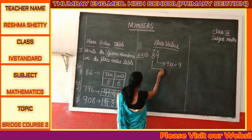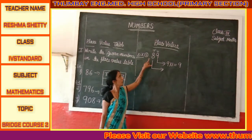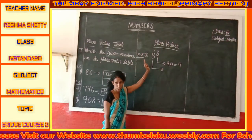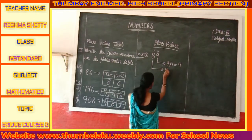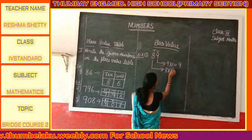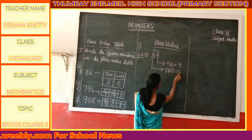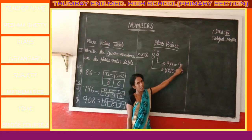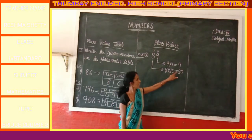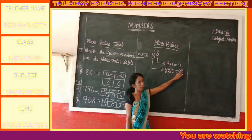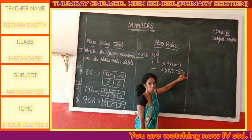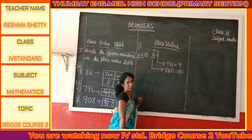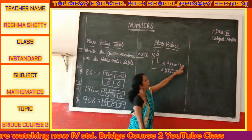Let us find the place value of 8. 8 represents the tens place, so 8 multiplied by 10 equals 80. The place value of 9 is 9 and the place value of 8 is 80. The place value depends upon the position of the digit in the number.